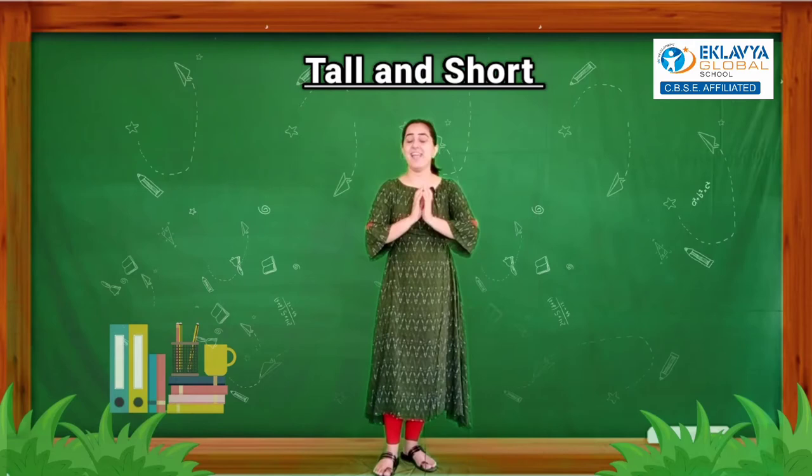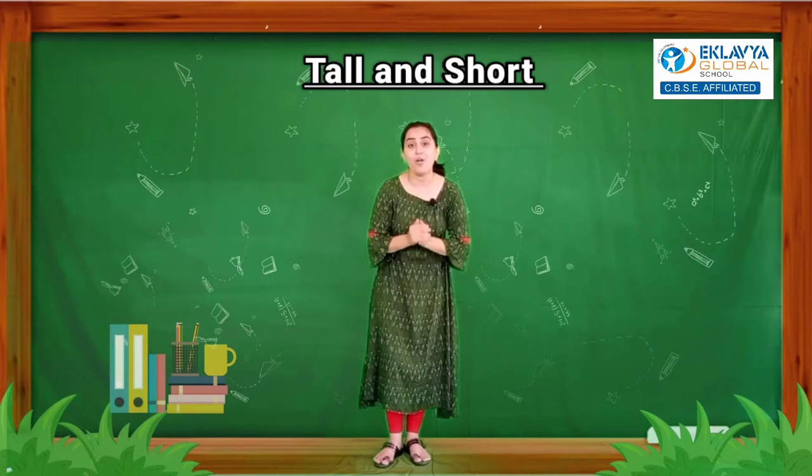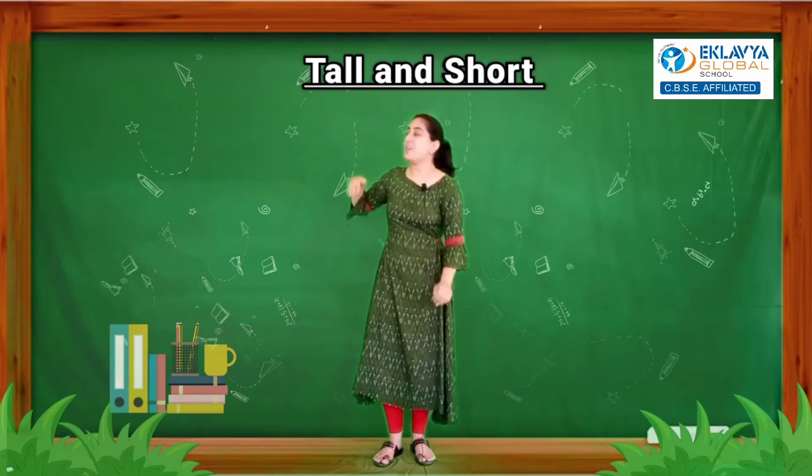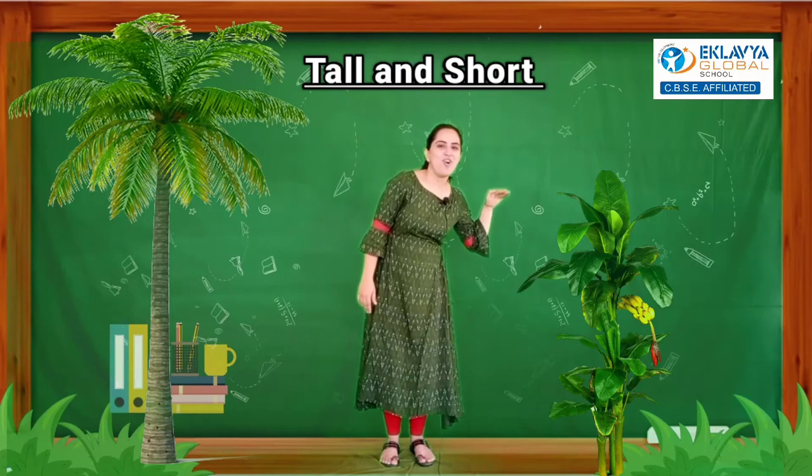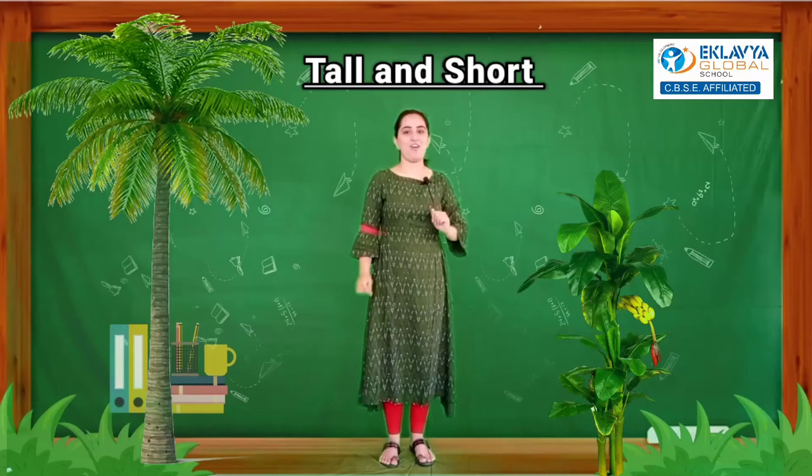Did you understand? Let us take one more example. Here we take the example of coconut tree. Have you seen the coconut tree? Coconut tree is tall. And which example should we take with coconut tree? Banana tree! Yes, banana tree is short. Coconut tree is tall and banana tree is short.